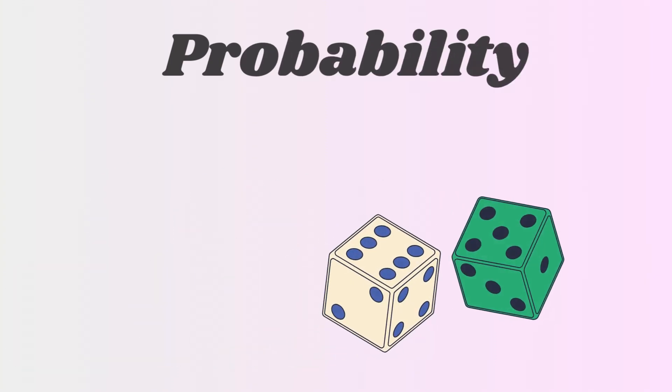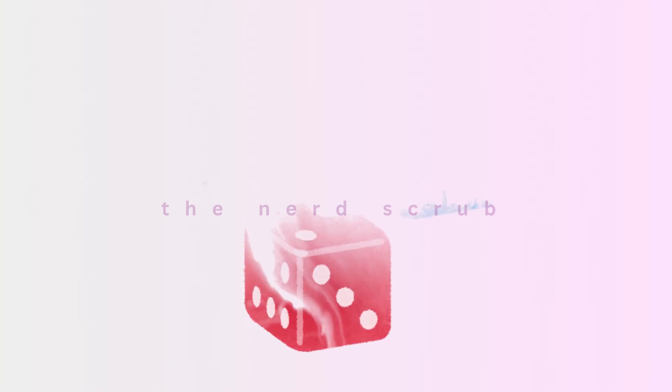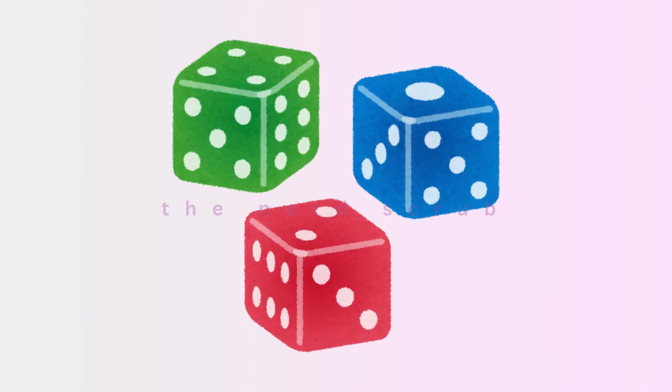Let's talk about a simple example of probability, rolling a die. A standard die has six faces, numbered from one to six.